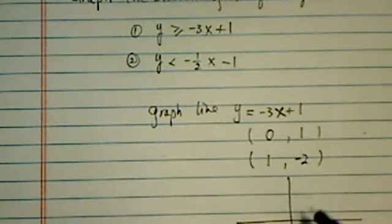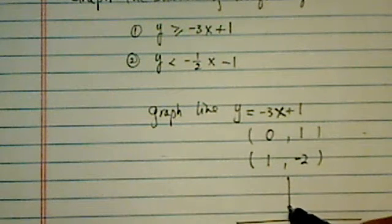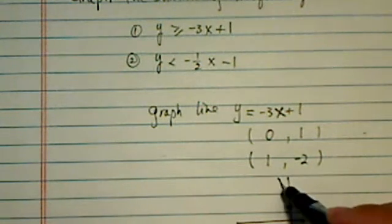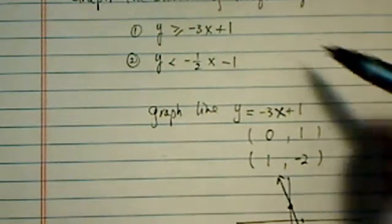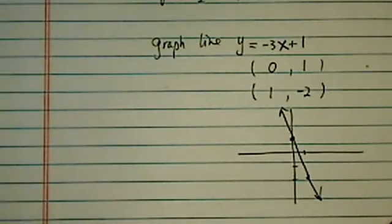But I prefer to draw two points. To me, it seems two points is easier. So 0 and positive 1, I have a point here. Positive 1 and -2, I have another point here, so here's my line. It's a solid line because I have an equal sign in my original inequality.